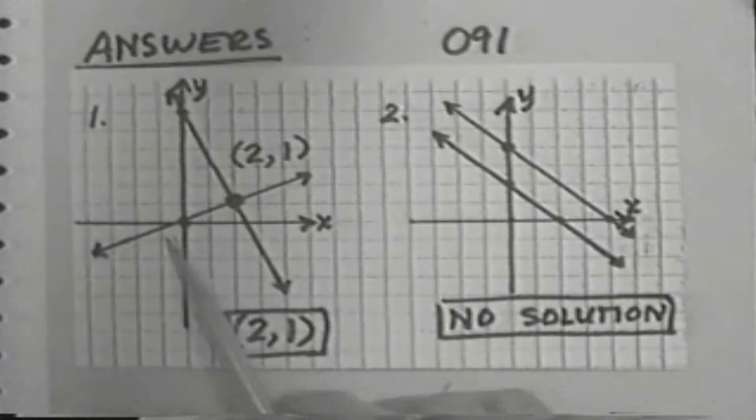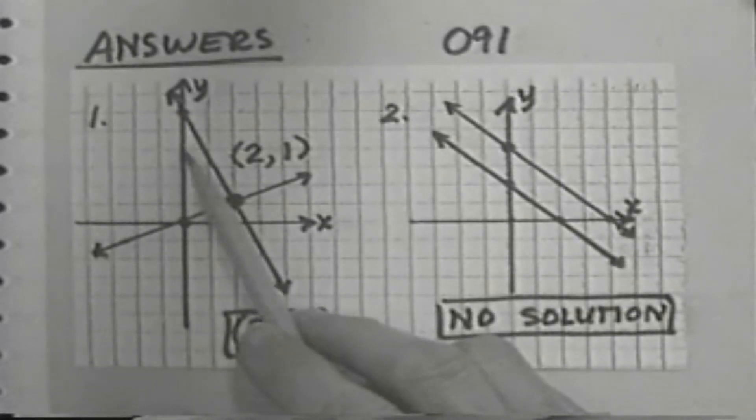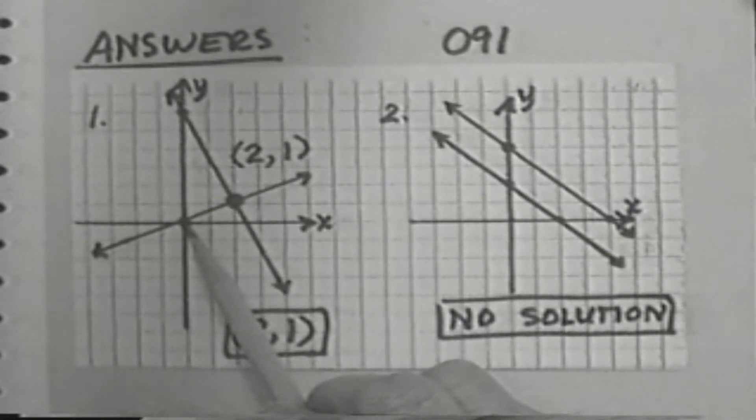One of the equations goes through the y value 1, 2, 3, 4, 5, 6. Y coordinates of the y value of 6 on the y axis. The other equation goes through the origin.